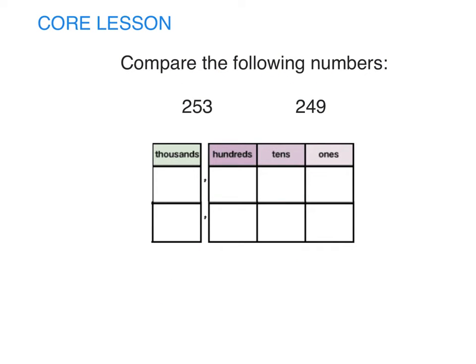We can compare numbers by using a place value chart and lining up the digits. Let's compare 253 and 249.